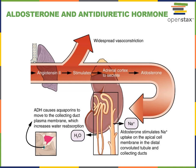While aldosterone stimulates sodium reabsorption, antidiuretic hormone stimulates water reabsorption. However, reabsorption of sodium creates an osmotic driving force that fuels further reabsorption of water. Both aldosterone and antidiuretic hormone can therefore work together to increase water reabsorption and help maintain blood volume.